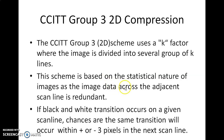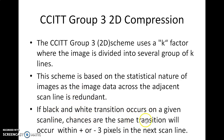The scheme is based on the statistical nature of images. The image data across the adjacent scan line is redundant. If a black and white transition occurs on a given scan line, chances are that the same transition will occur within plus or minus 3 pixels in the next scan line.